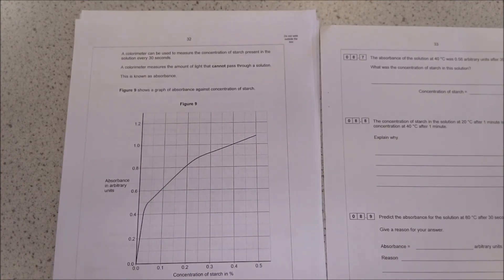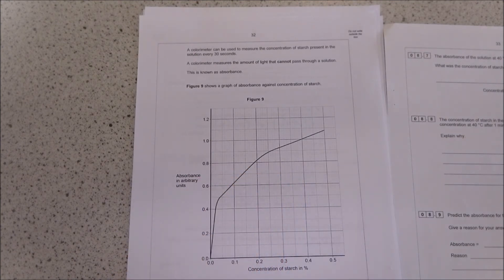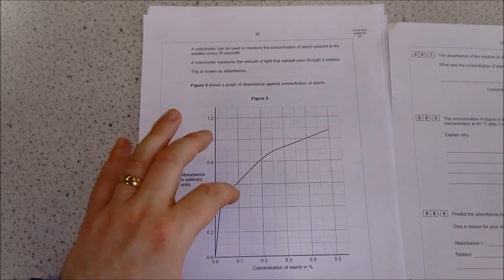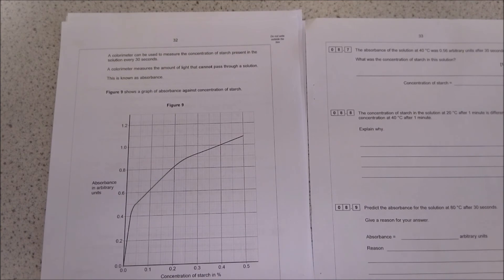It says the absorption of the solution at 40 degrees was 0.56 arbitrary units after 30 seconds. What was the concentration of starch solution? You'd just go and read it off your graph. You're going to go read it off, so it would be there, go across and just read it down. Remember, if it makes it easier, go and draw lines on just to show where you were getting the information from, and it will help you read it. So the concentration of starch solution at 20 degrees centigrade after one minute is different from the concentration after 40 minutes. Explain why.